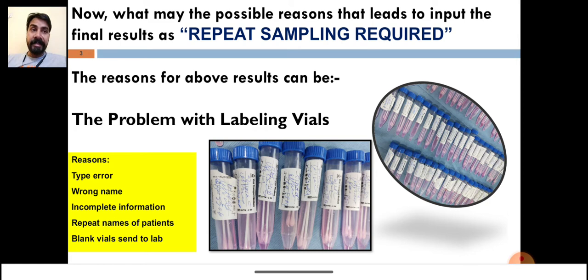This problem is with the collection facility. The technician will collect your sample and there they will do a typo error. See these are the vials—can you differentiate the names on these vials? I don't think so. How can we report these samples as positive and negative, and how can I identify whose sample is this?